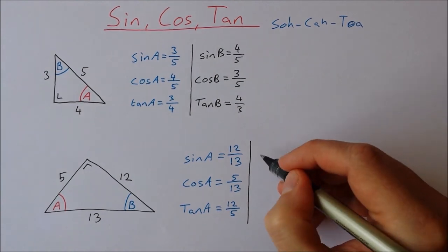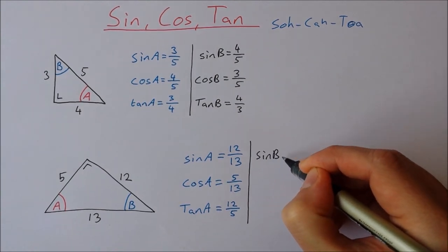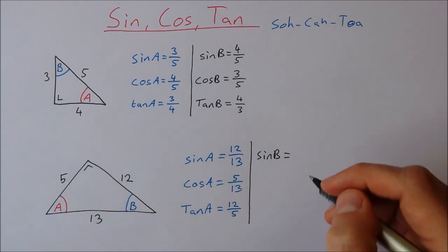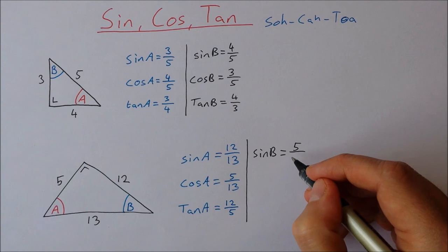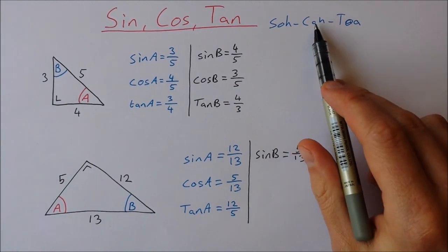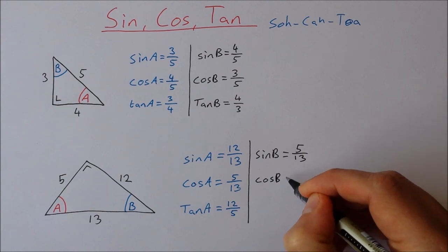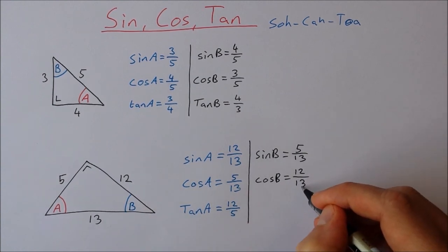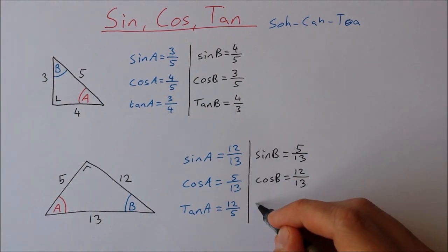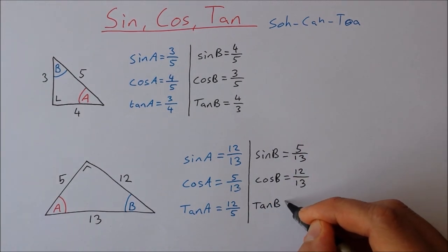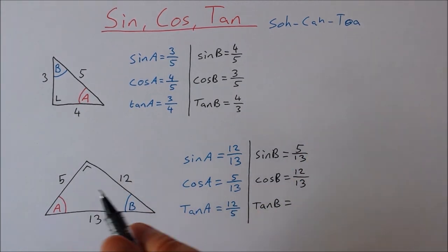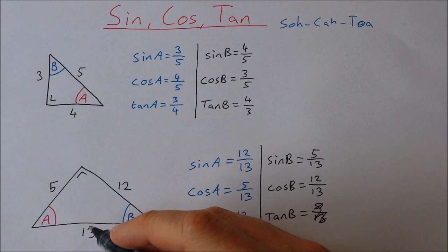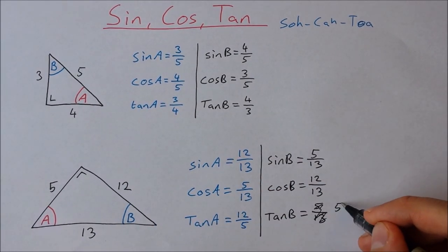Let's go for the sine, cos and tan of B. Sine B — this time we're looking at this angle — opposite over hypotenuse, opposite is 5, hypotenuse is 13. Cos of B — adjacent over hypotenuse — adjacent is 12, hypotenuse is 13. And then tan of B is opposite over adjacent — opposite is 5, adjacent is 12, so it's 5 over 12.